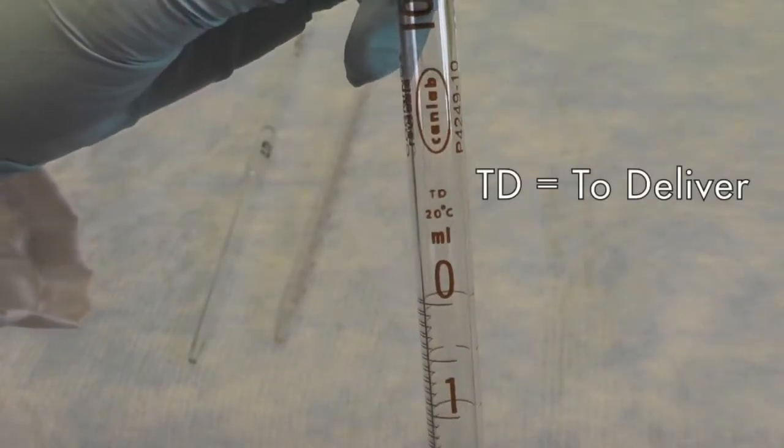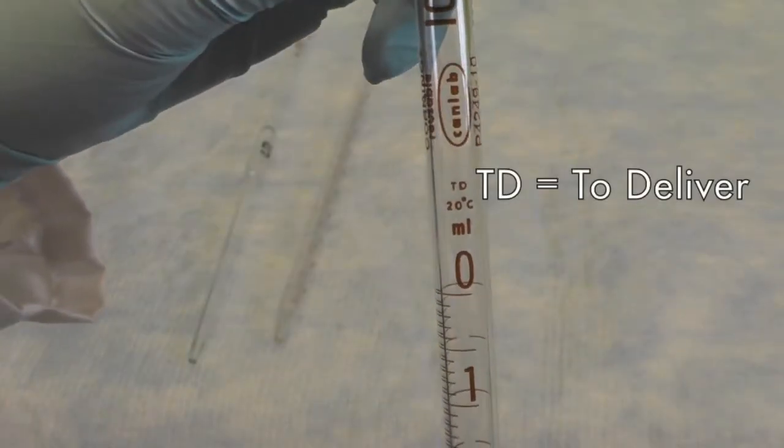All of these pipettes are considered to-deliver type pipettes, as noted by TD on the pipette. To-deliver pipettes do not require rinsing to obtain the exact volume of the transfer solution compared to the to-contain type.